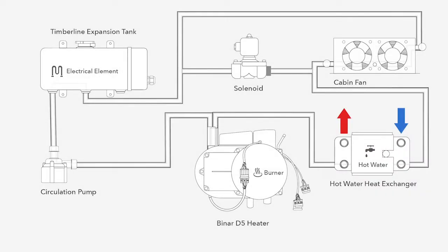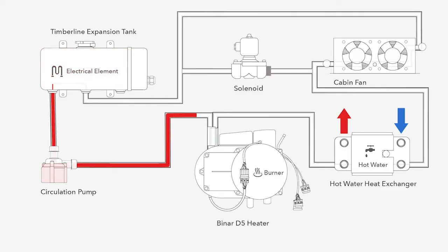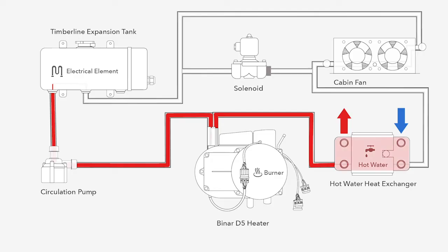I'm going to pull up this diagram to give a better understanding and visualization of the system itself. The glycol starts in the expansion tank — this is where the electric element sits. The glycol then goes to the circulation pump where it is pumped into the diesel heater, our primary heat source at 17,000 BTUs. From the heater, the glycol goes to the heat exchanger, where your cold domestic water comes in and your hot water comes out. This is where all your hot water for your showers and sinks is created.